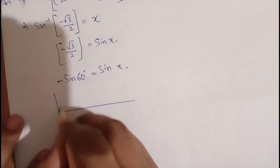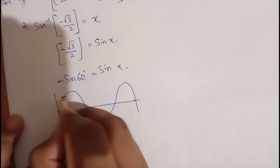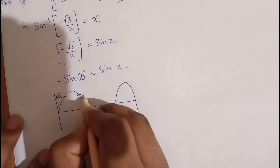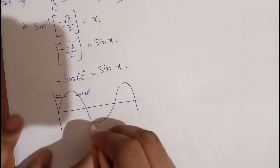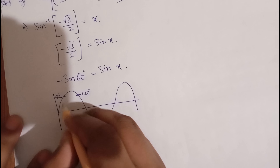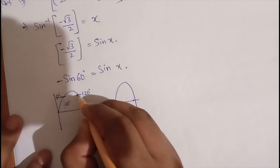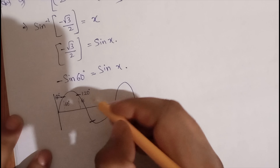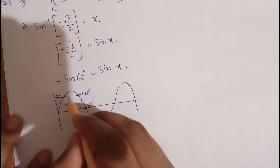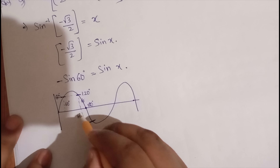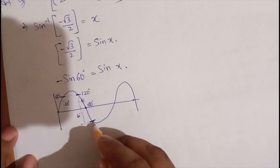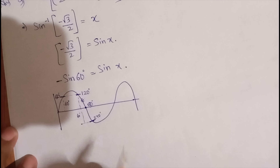I will draw the sine curve to find the angle. For example, at 60 degrees it is positive, and it reflects at 120 degrees. If I take 60 degrees below the axis, that is 180 plus 60, which gives 240 degrees. So minus sine 60 corresponds to sine at 240 degrees.